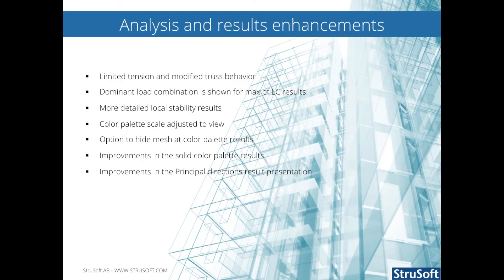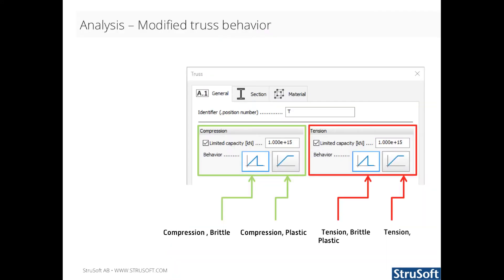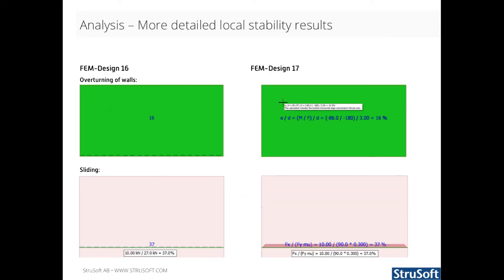Let's take a look at the analysis and results enhancements. In FemDesign 17, limited tension capacity is now available for trusses. FemDesign can also manage a situation where the compression or tension is changing during the iteration by the uplift in non-linear calculation. The stability results display is changed — the result now shows the calculation method and values for eccentricity calculation and utilization.